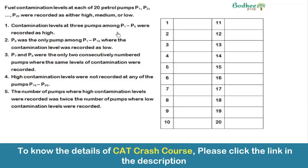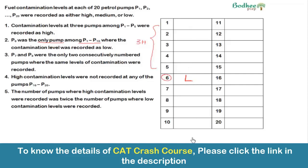The first condition says contamination level at three petrol pumps among P1 to P5 were recorded as high. The second condition states P6 was the only pump among P1 to P10 where contamination level was recorded as low. So P6 gets L, and all other nine pumps from P1 to P10 will be either high or medium.